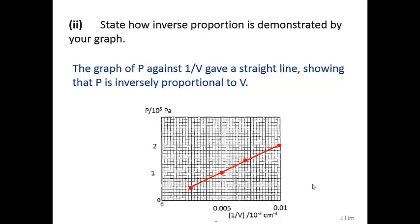The graph of P against 1 over V gives a straight line showing that P is inversely proportional to V. And this graph will also pass through the origin when extended.